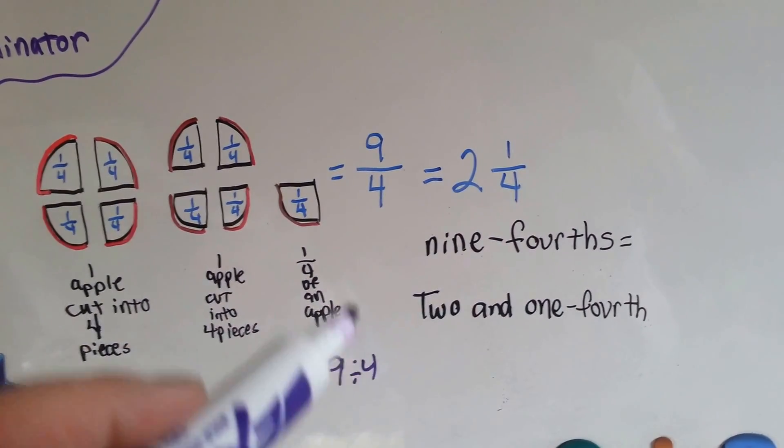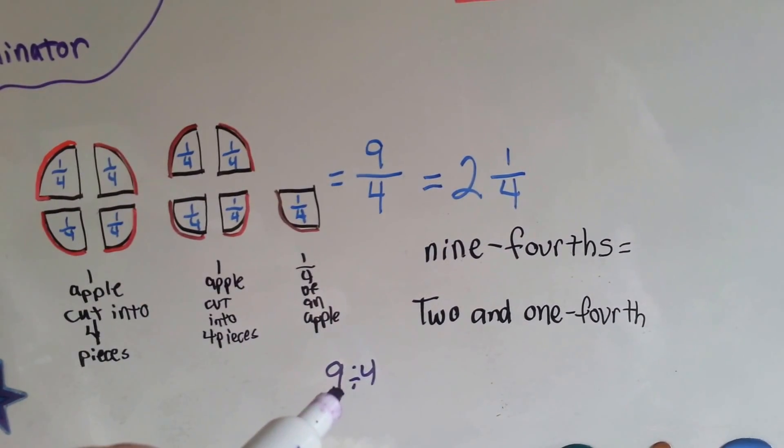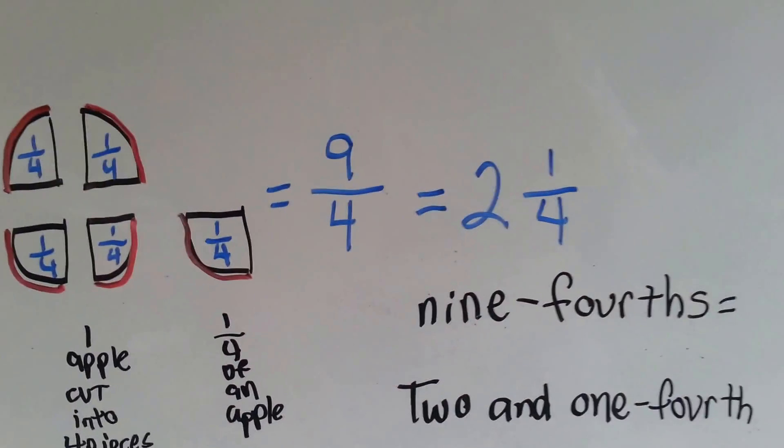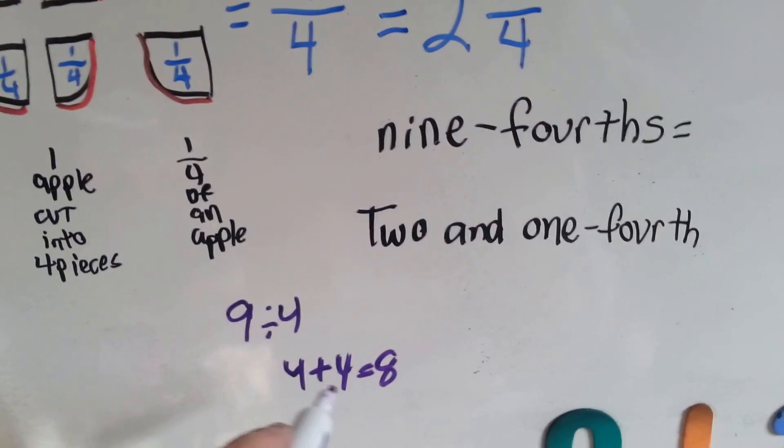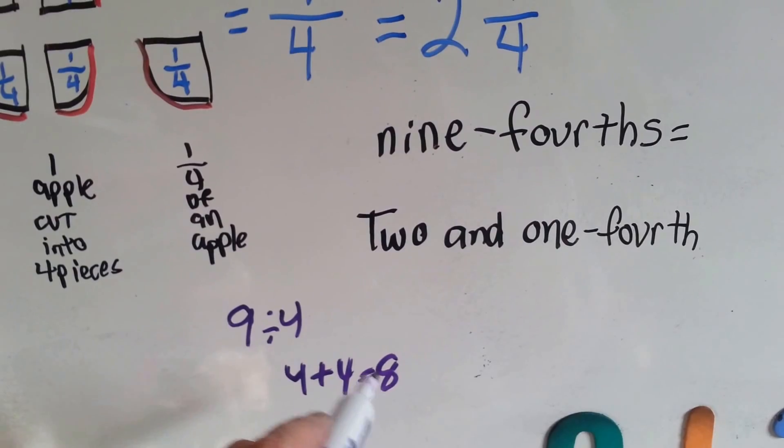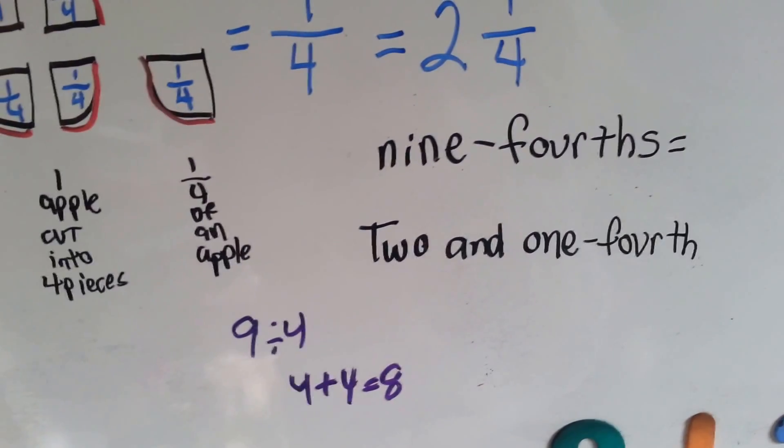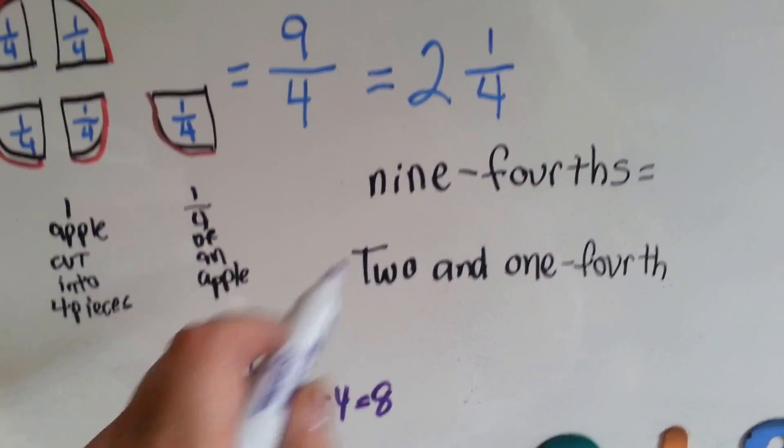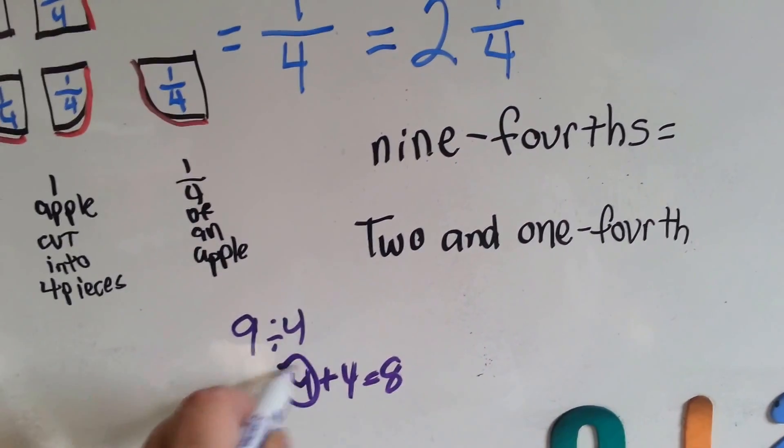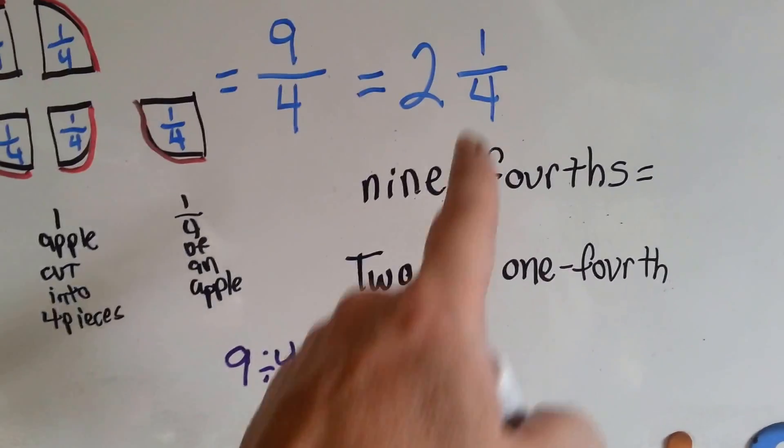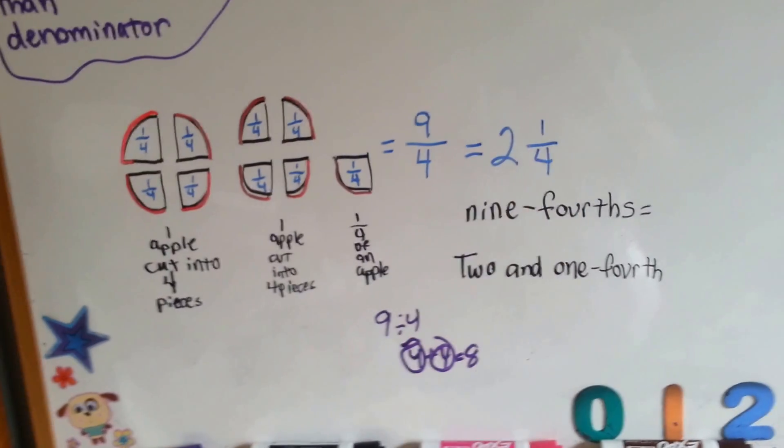It's like saying nine divided by four, because that's a dividing line. How many times can four fit into a nine? Well, four plus four is eight. Four plus four is eight. That fits into nine with one left over, because you need one more to get to the nine. So, that means you have two with a little fourth left over. Two and one fourth. Nine fourths equals two and one fourth.